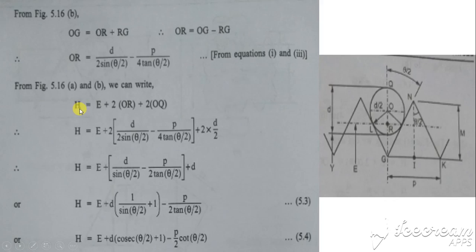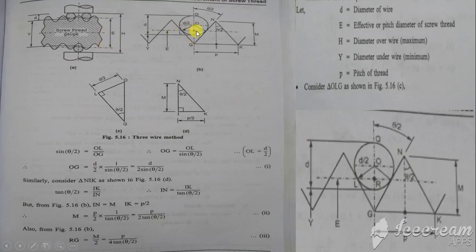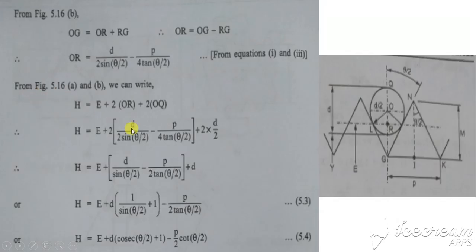From the diagram, the dimension over wires h can be written as h = e + 2×OR + 2×OQ. The effective diameter e is measured from the pitch line, hence the 2×OR and 2×OQ terms. After substitution and further simplification, the final three-wire formula is: h = e + d×cosec(θ/2) + 1 − (p/2)×cot(θ/2).